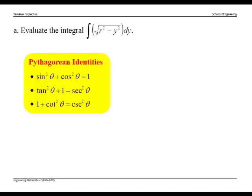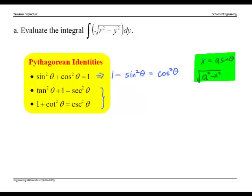We consider the Pythagorean identities. In the first identity, we can rewrite this as 1 minus sine squared theta equals cosine squared theta. So if we have a radical of the form square root a squared minus x squared appearing in the integral, an appropriate substitution is x equals a sine theta. Similarly, for the other two identities, if we have the radical a squared plus x squared in the integral, then the substitution x equals a tangent theta or a cotangent theta will be appropriate.